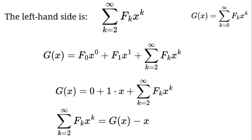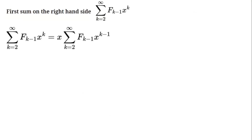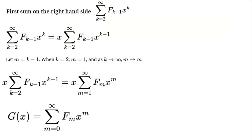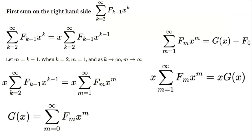Next, the first sum on the right-hand side: the sum from k=2 to infinity of f(k-1)·x^k. We can factor out an x and rewrite this as x times the sum from k=2 to infinity of f(k-1)·x^(k-1). If we let m = k-1, this becomes x times the sum from m=1 to infinity of f(m)·x^m, which is just g(x) - f(0) = g(x). So this simplifies to x·g(x).